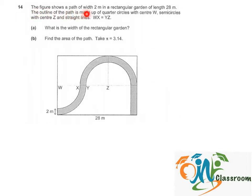The figure shows a path of width 2 meters in a rectangular garden of length 28 meters. The outline of the path is made up of quarter circles with center W, semicircles with center Z, and straight lines WX equals YZ.